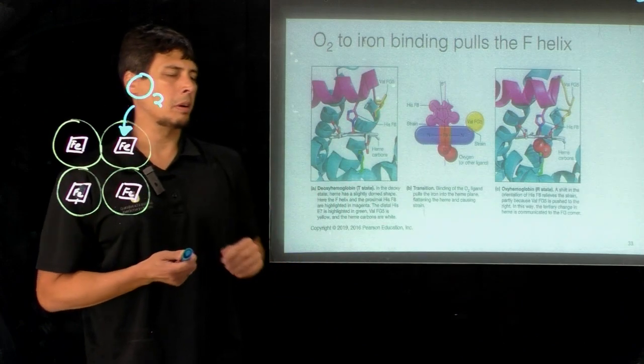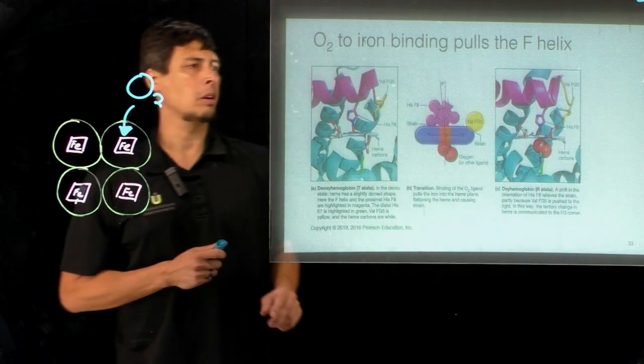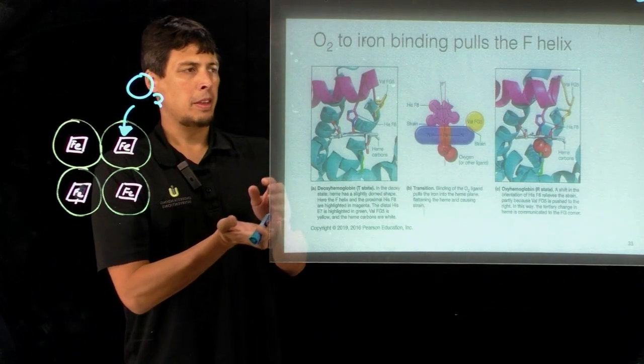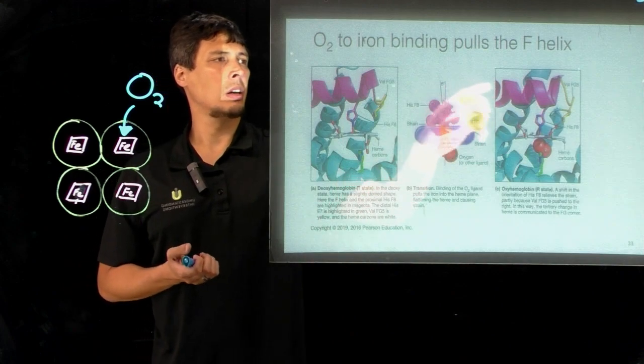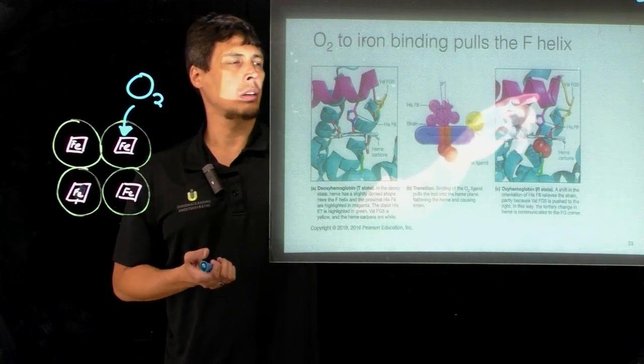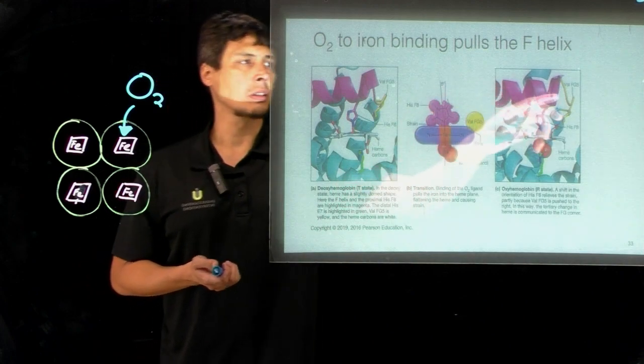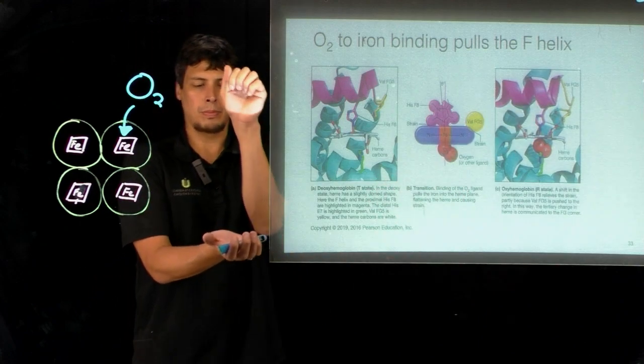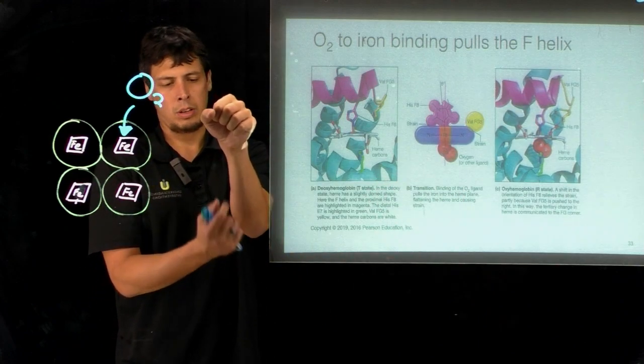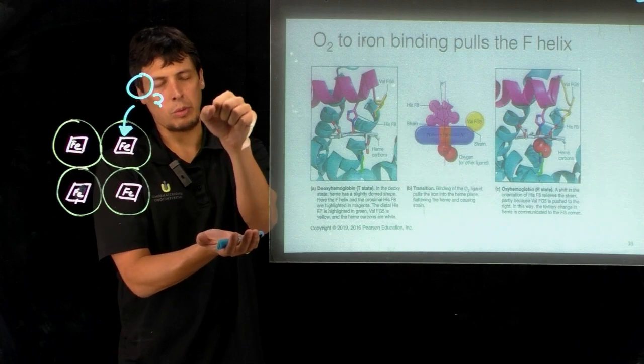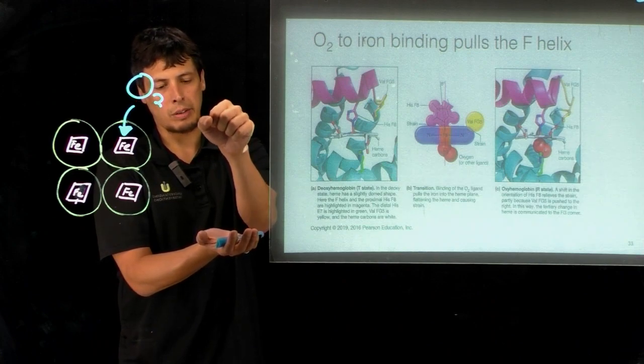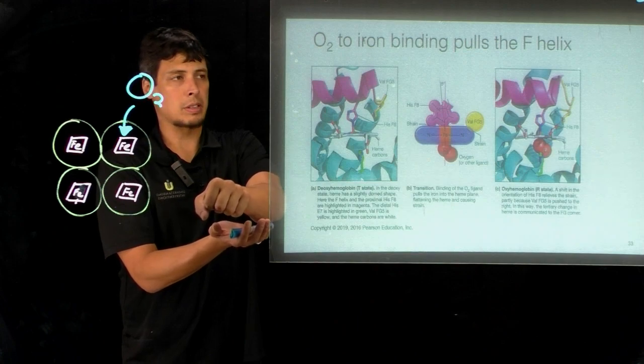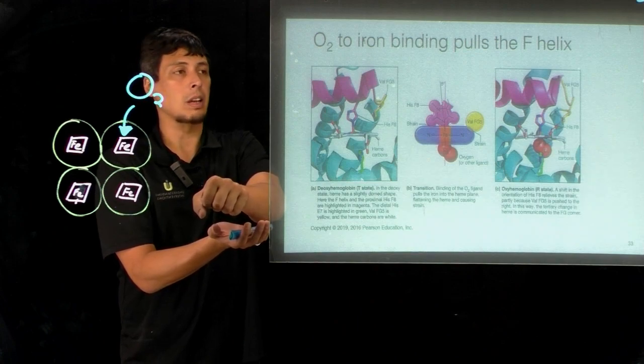What's important about that, which can be seen clearly on this right hand panel, is that the histidine is attached to this helix called the F helix. The F helix is like a lever that the histidine is attached to, and when oxygen binds and pulls the iron, it pulls the histidine and it pulls this lever, this F helix lever.